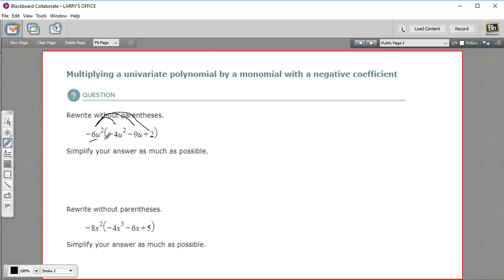So the first part of this problem, let's just do this times the first term here. We've got a negative 6u squared times a negative 4u squared. And I'm going to do this a part at a time. First, let's just look at the negative signs. A negative times a negative is going to be a positive. So it's a positive.